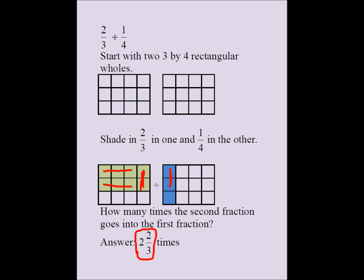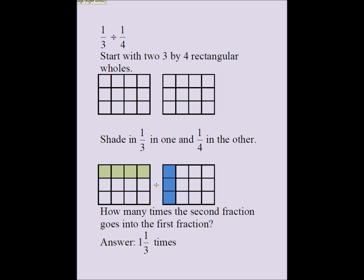Let's look at 1 third divided by 1 fourth. I take a 3 by 4 rectangle for my whole. I shade in 1 third in green and 1 fourth in blue. The measurement meaning of division tells me how many times the divisor, 1 fourth, goes into the dividend, 1 third. The blue patch goes into the green patch one time, and then only 1 third of the blue patch will fit. So the answer is 1 and 1 third.